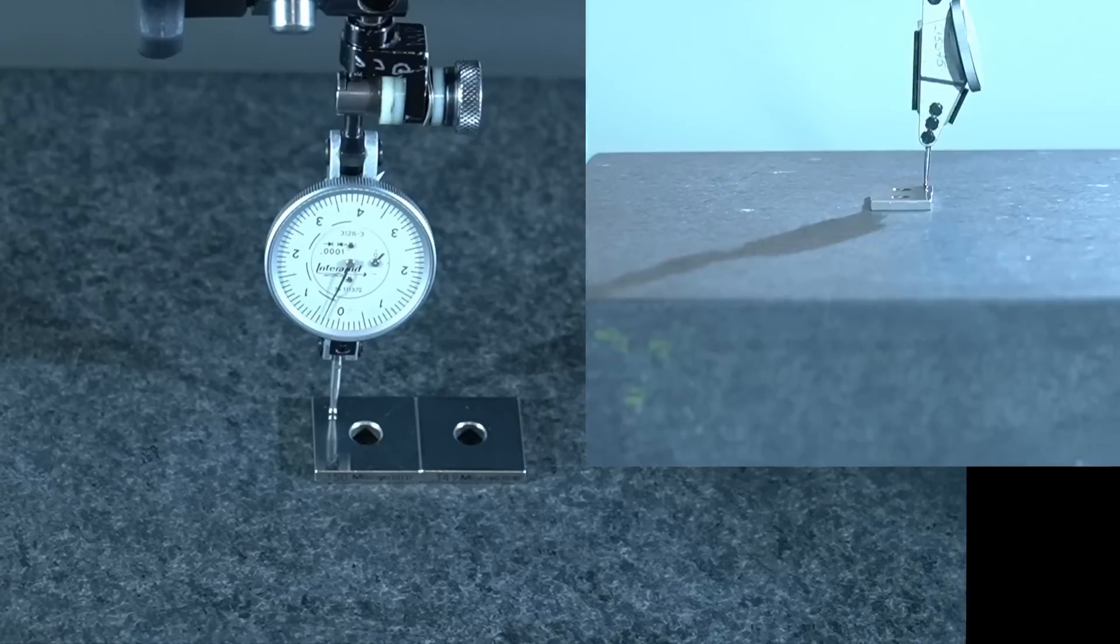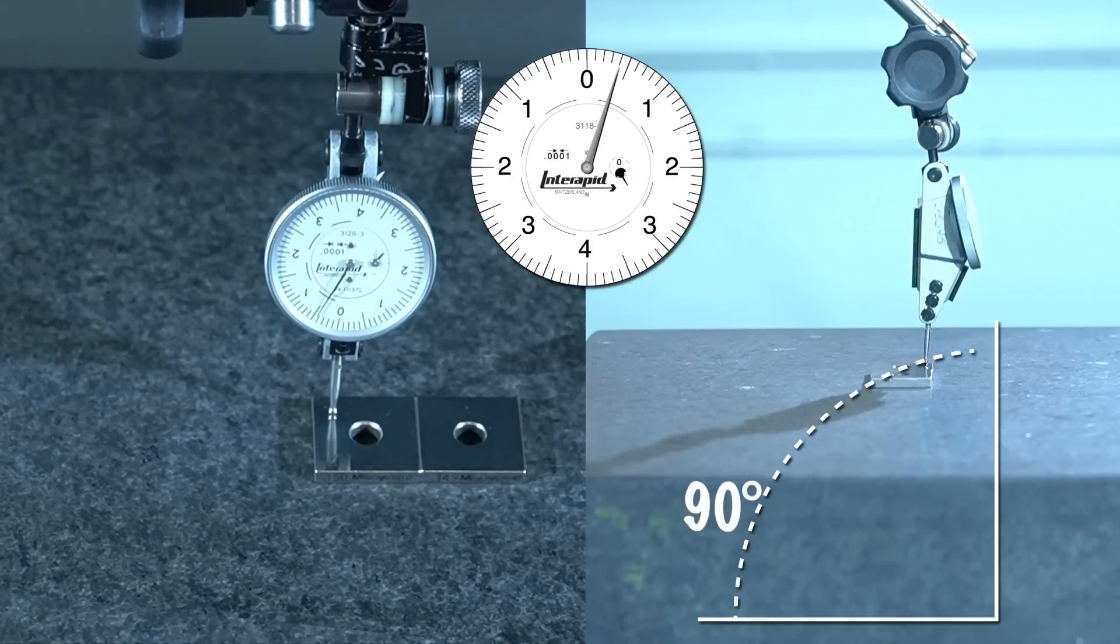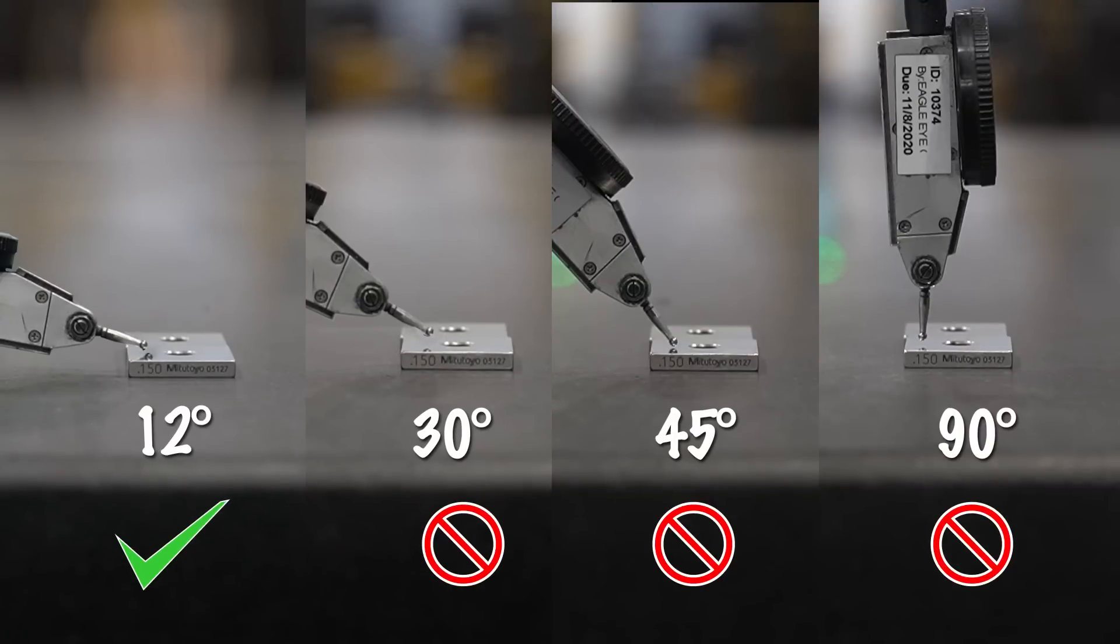Finally, let's go to the ridiculous extreme of putting the stylus at 90 degrees. Obviously that's just silly, because the stylus wasn't even designed to move in that axis. So always set an Interapid indicator at 12 degrees from the surface to be measured.